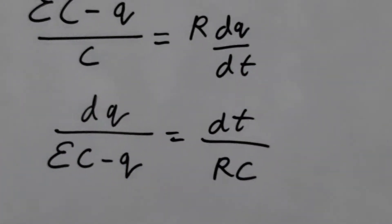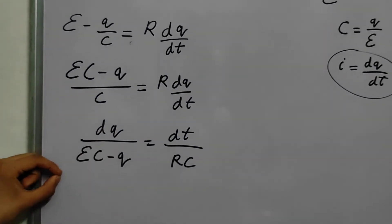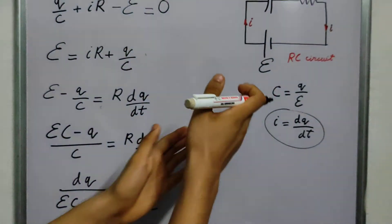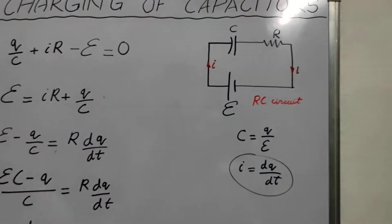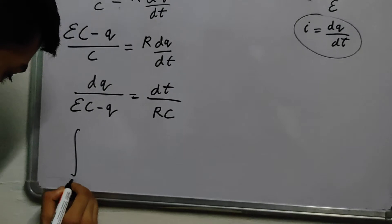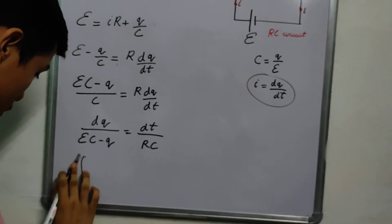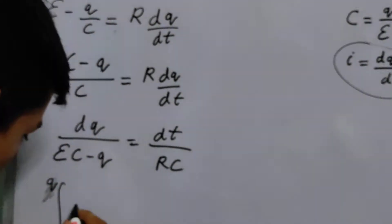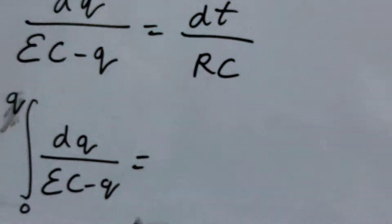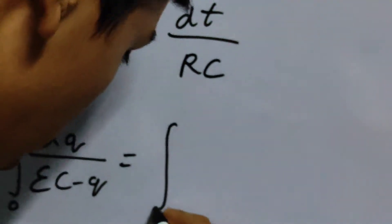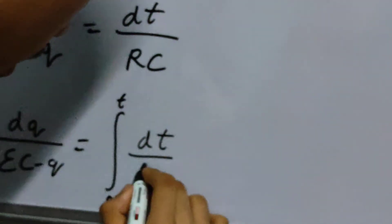Now we need to know how does charge accumulate from time T equal to zero from the moment we establish a circuit till some time T. So we can integrate with limits. We write zero, the charge in the capacitor initially, to some amount Q, DQ by EC minus Q, remains the same. And we can integrate this with limits zero to some value in time, T, by RC.